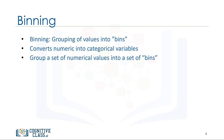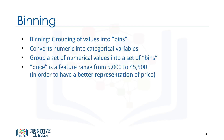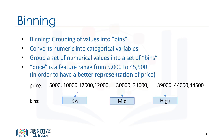In addition, sometimes we use data binning to group a set of numerical values into a smaller number of bins to have a better understanding of the data distribution. As an example, price is an attribute with a range from 5,000 to 45,500. Using binning, we categorize the price into three bins: low price, medium price, and high prices.